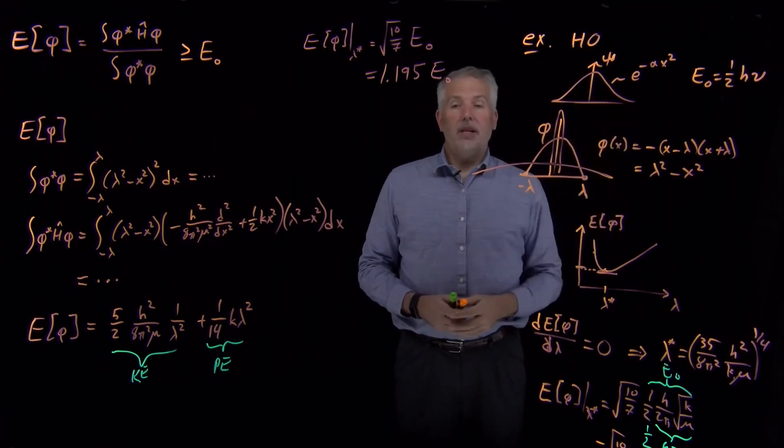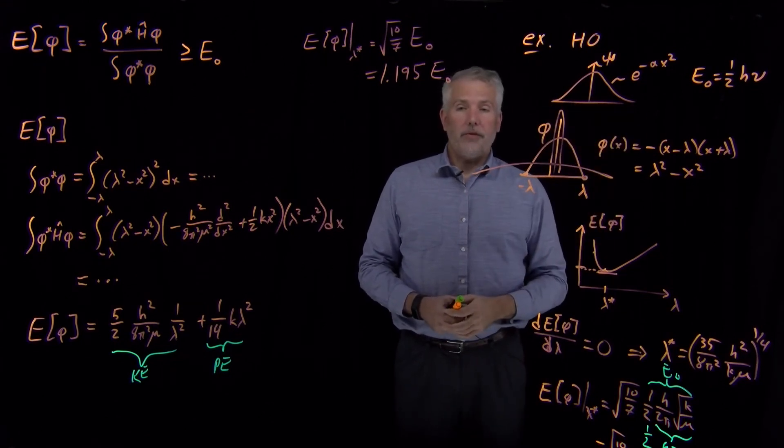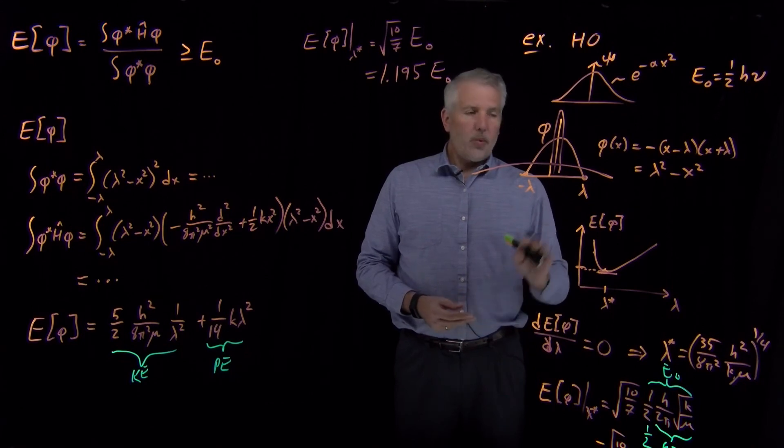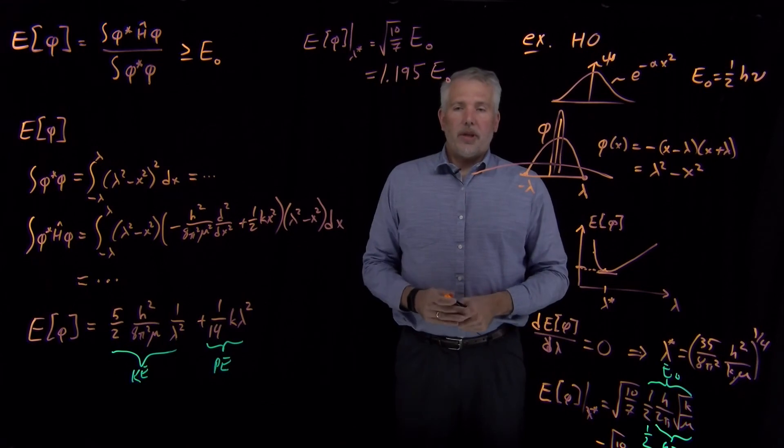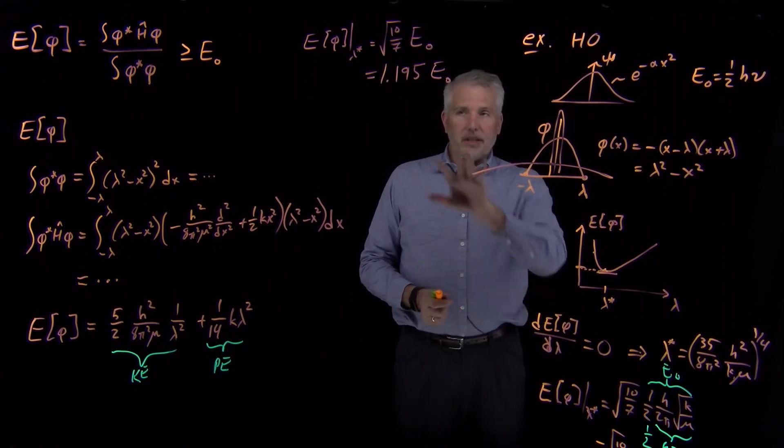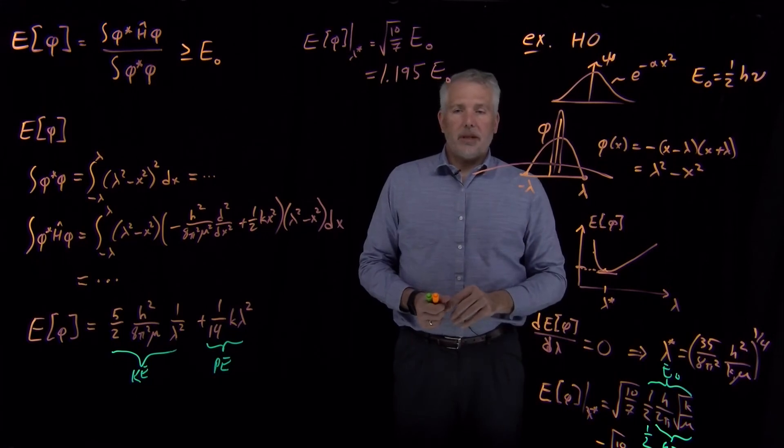Clearly, if I had guessed a Gaussian for the ground state wave function, then I would have been able to recover the true ground state energy. With this particular guess, I can only recover within about 20% of the ground state energy. But this example, the main point of this example is not the numbers.